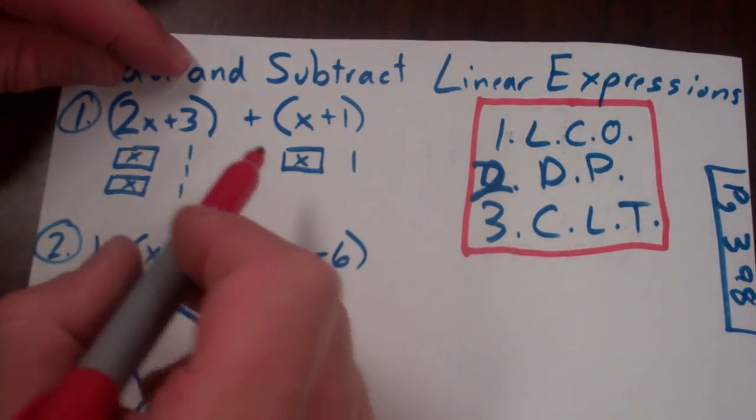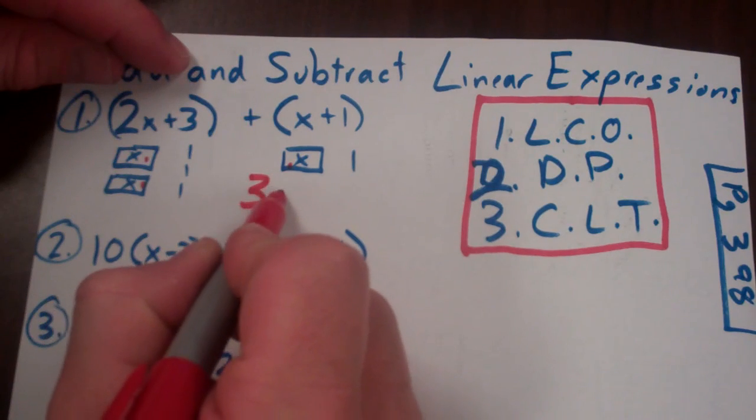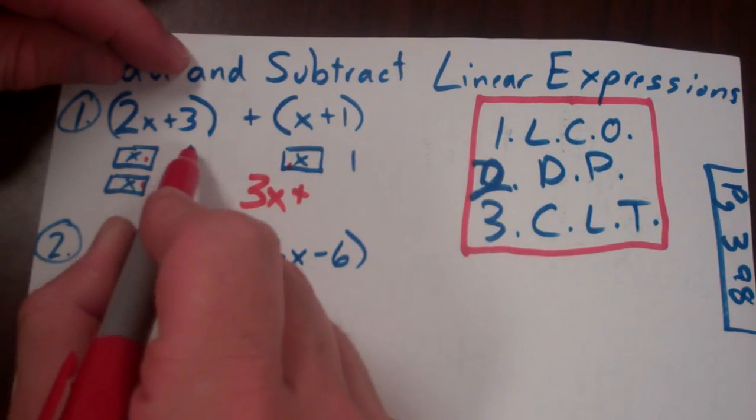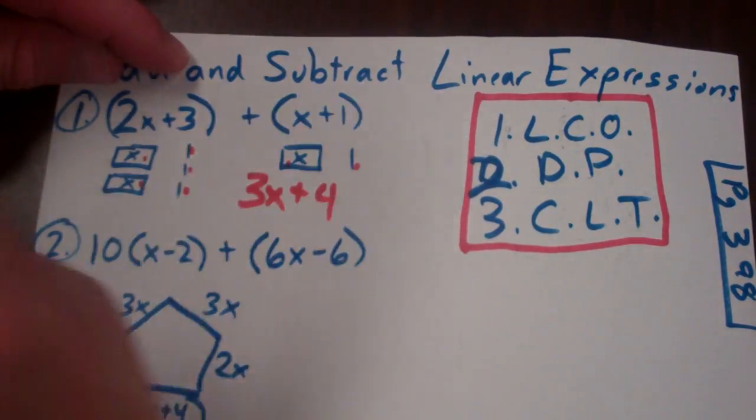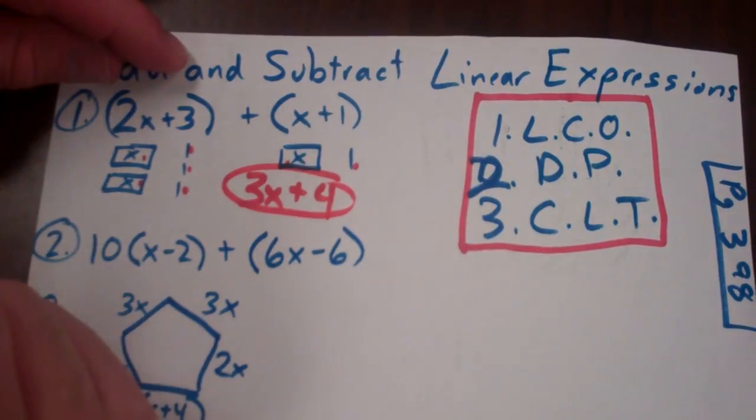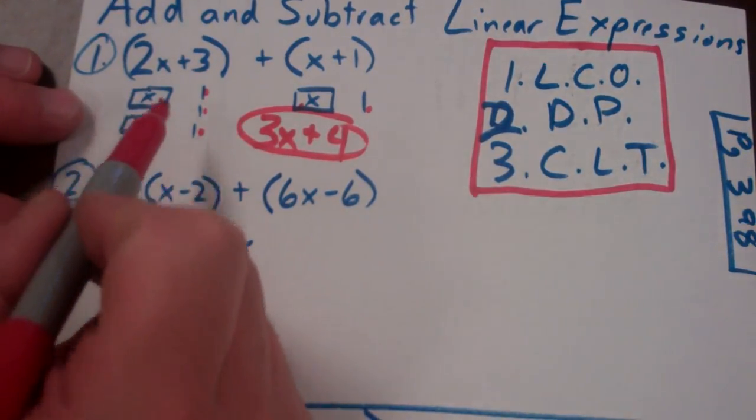And so I have two x's and I have three 1's. And I have an x and a 1. I want to add them together. So I would have 1, 2, 3 x's. And I would have 1, 2, 3, 4, 1's. And so when I add those together, I'm going to get 3x plus 4. Okay?